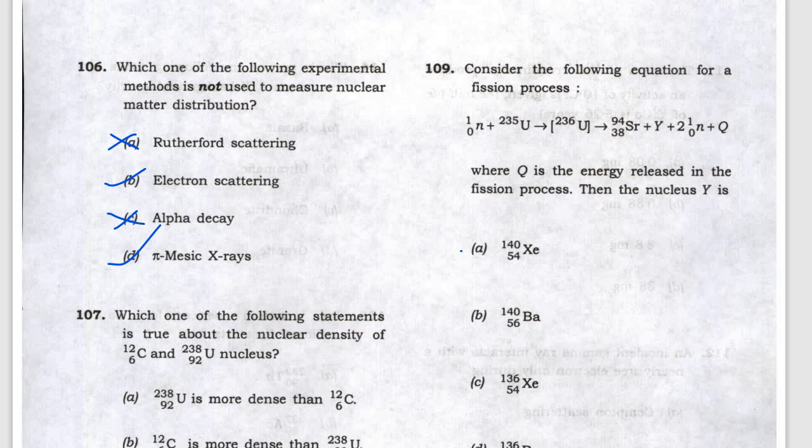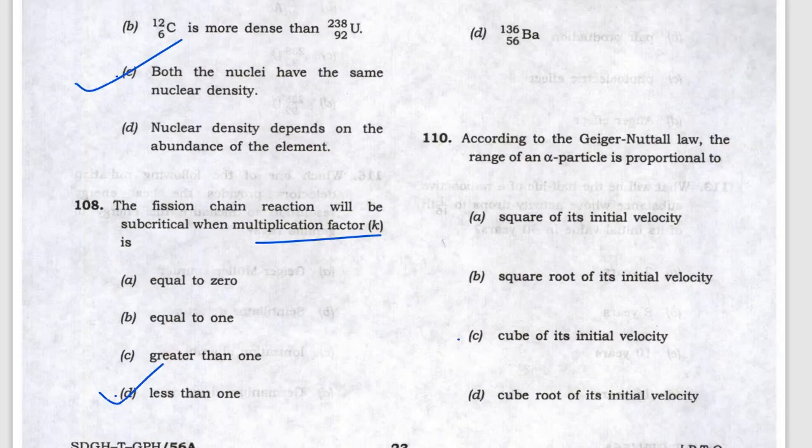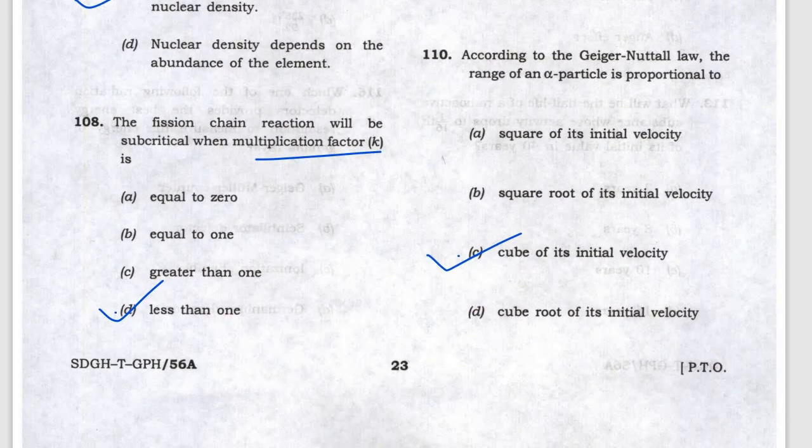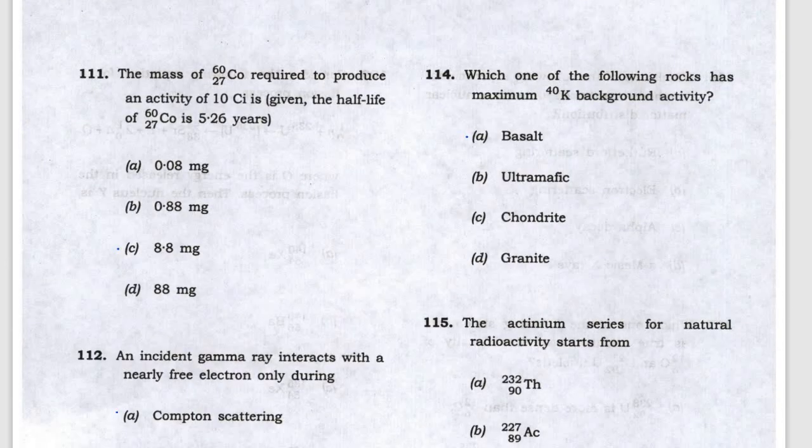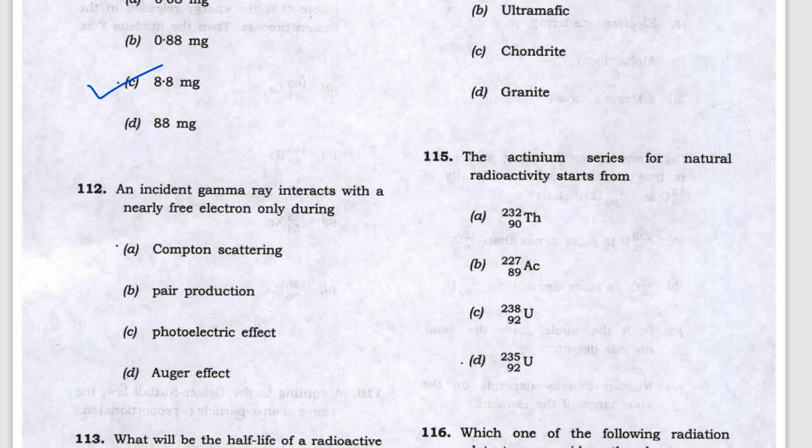According to the Geiger-Nuttal law, the answer is the cube of the initial velocity, so C is correct. For the radioactivity problem, if you solve it, it's quite complicated, but the answer is 8.8 mg, so C is the answer.